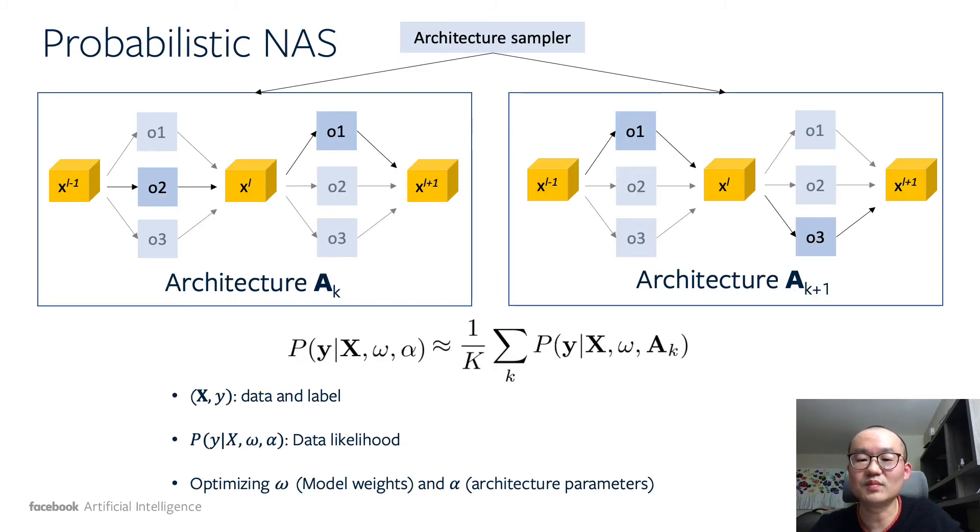FP-NAS is built within the probabilistic NAS framework. In this framework, the search space is defined as the distribution over all possible architectures. The distribution is fully specified by architectural parameters.